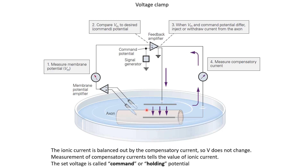Now considering the ionic currents: if current flows through the ion channels it will try to change the membrane potential, but the feedback current through the amplifier — also known as the compensatory current — will balance out the ionic currents to ensure the membrane remains at the command potential. If current flows in through ion channels, the compensatory current flows out, and vice versa. By measuring the compensatory current we know the amount of ionic current entering the neuron; a negative compensatory current tells us ionic currents are flowing in.